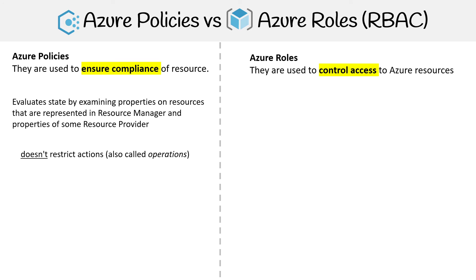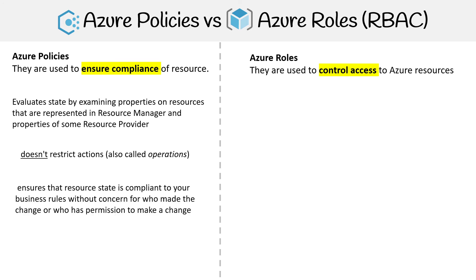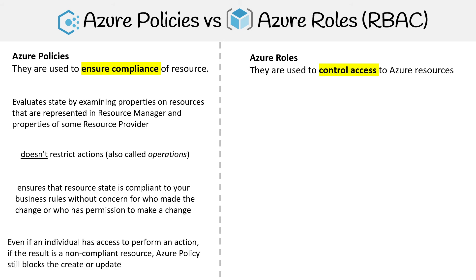Azure Policies do not restrict actions. They ensure that resource state is compliant to your business rules without concern for who made the change or who has permission to make the change. Even if an individual has access to perform an action, if the result is a non-compliant resource, Azure Policy still blocks the create or update actions.